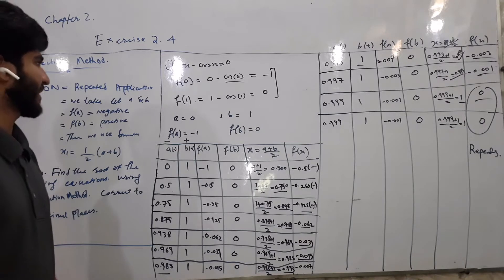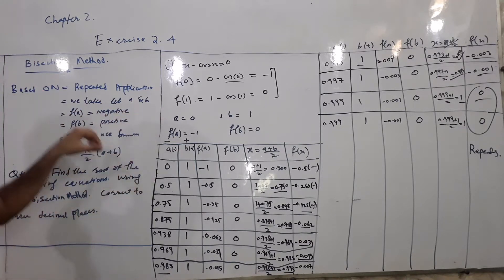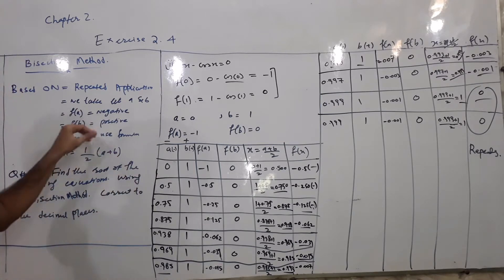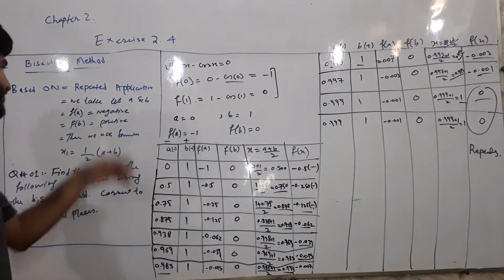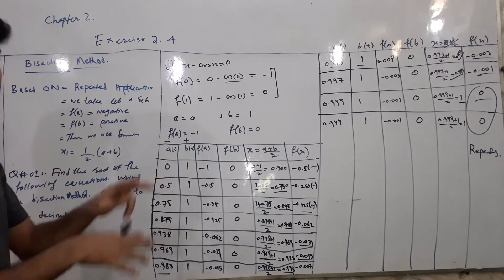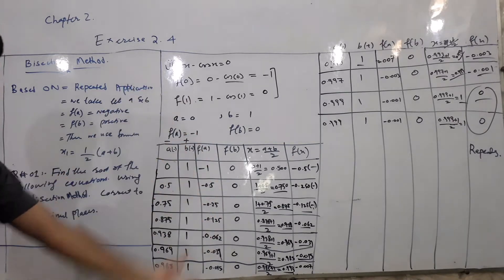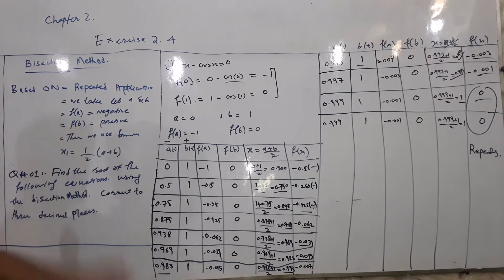تمہیں پتہ ہے method کیا ہوتا ہے bisection کا. کچھ steps یہاں پر لکھے ہوئے ہیں. ہم a اور b کے values لیتے ہیں. پھر f(a) اگر negative ہوتا ہے تو f(b) positive ہونا چاہیے، اور اگر f(a) positive ہو تو f(b) negative. یہ condition ہوتی ہے. اس کے بعد formula استعمال کرتے ہیں: x1 = (a + b) / 2.